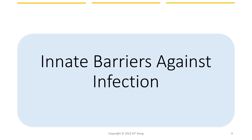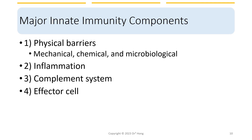To begin our innate immune system discussion, let's start with the very first line of defense: the barriers against infection. Here are some major components of the innate immune system. First, we have physical barriers — mechanical, chemical, and microbiological. Second would be inflammation, third the complement system, and then effector cells. In this lecture, we'll have an overview of all these key players in innate immunity. Later lectures will look specifically at inflammation, complement systems, and effector cells.